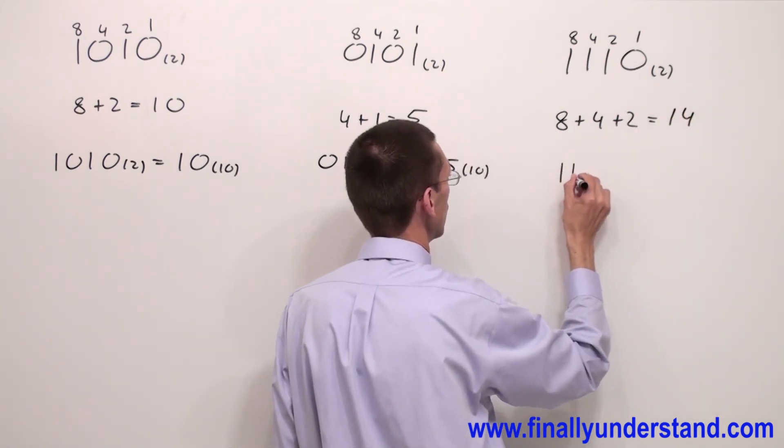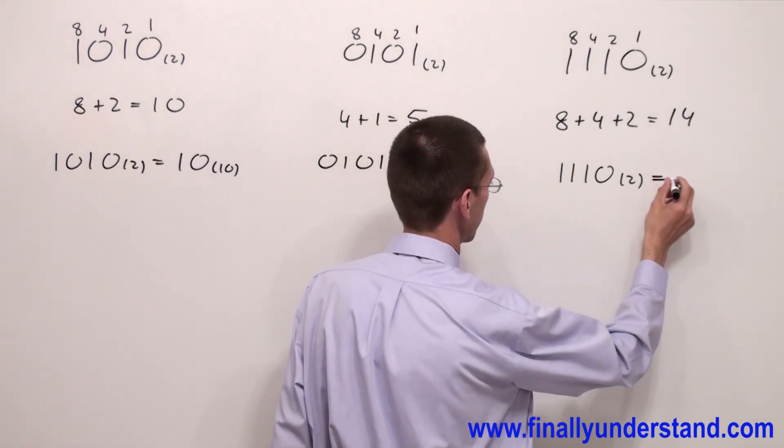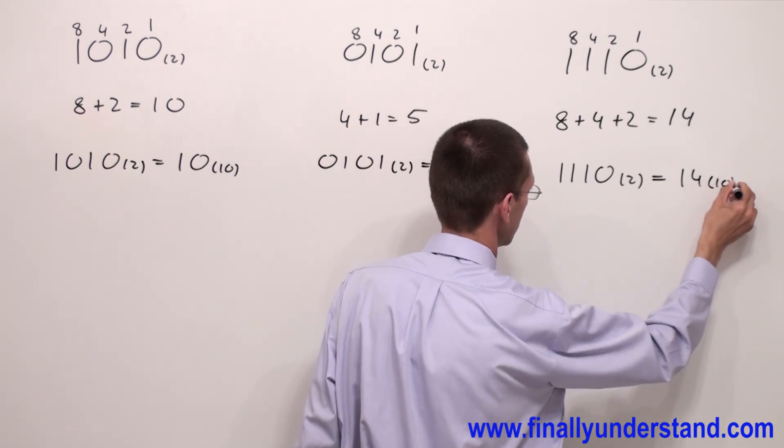So, I can say that one, one, one, zero, base two is equal to 14 base 10.